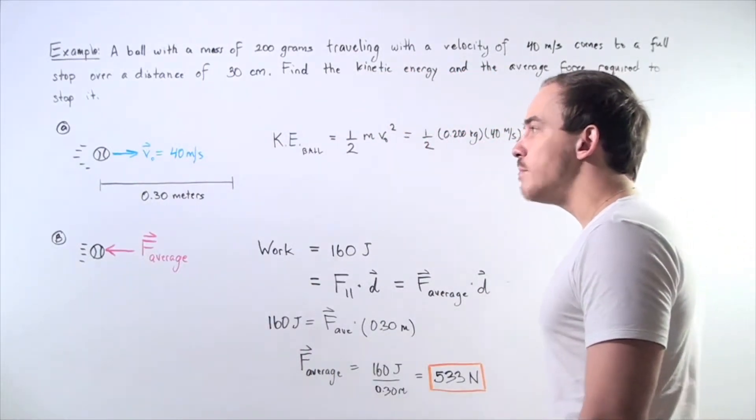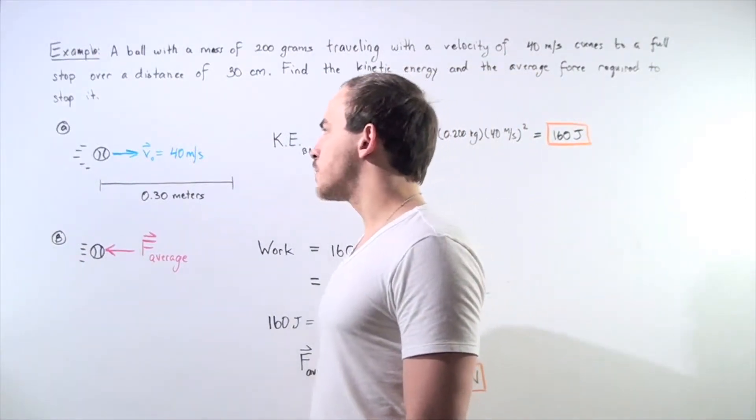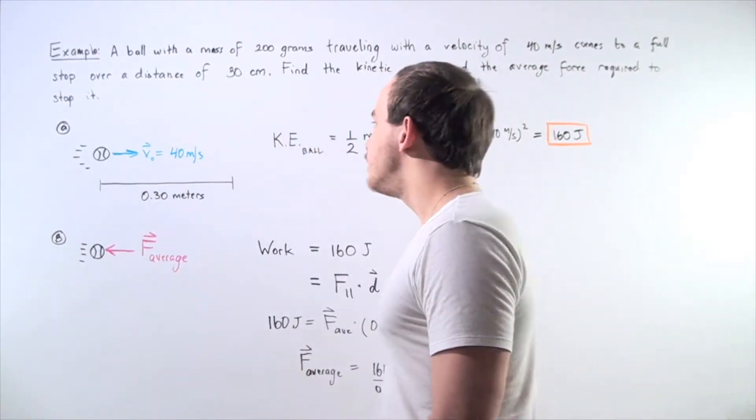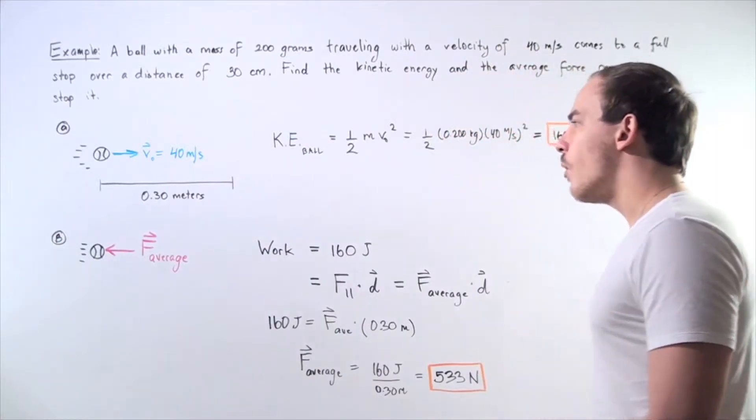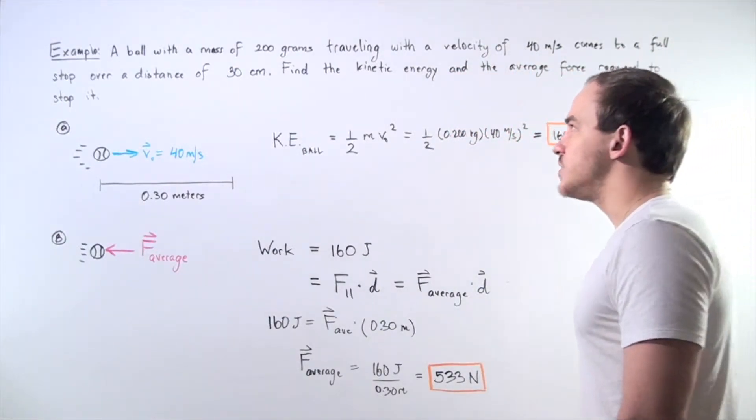We want to find the initial kinetic energy of our object. Initially our object is in motion, moving with a velocity of 40 meters per second. We can find the kinetic energy of the ball by using our formula: one-half mass times V squared.